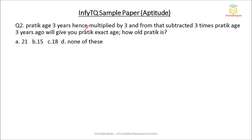Now question number two is from the topic 'Problems on Ages.' Pratik's age three years hence multiplied by three, minus three times Pratik's age three years ago, will give Pratik's exact age. The problem is very simple — you just need to understand the basic concept. Suppose your present age is X; your age after three years is X plus 3, and your age three years before is X minus 3.